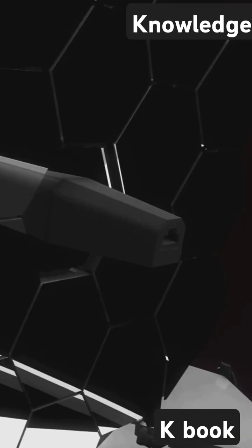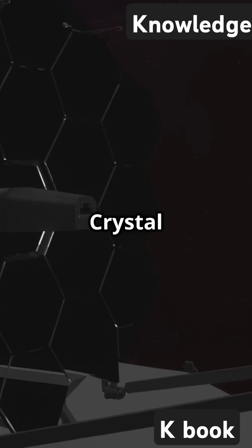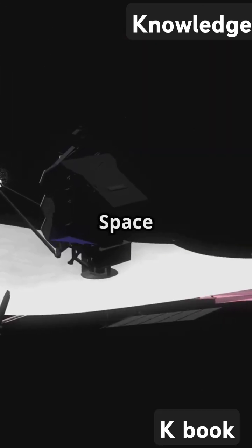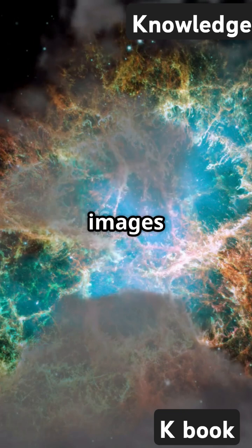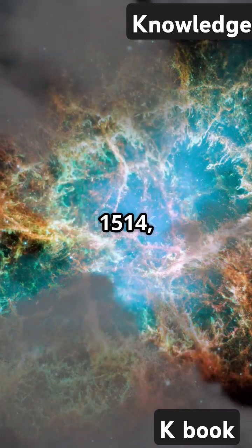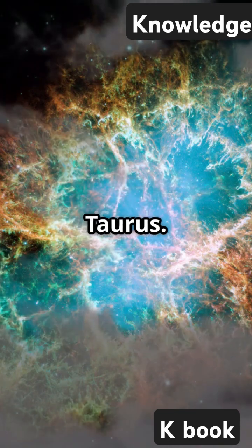This is gonna blow your mind. The James Webb Space Telescope has just unveiled the secrets of the Crystal Ball Nebula. The James Webb Space Telescope has done it again. It's captured stunning new images of NGC 1514, also known as the Crystal Ball Nebula, located 1,500 light-years away in Taurus.